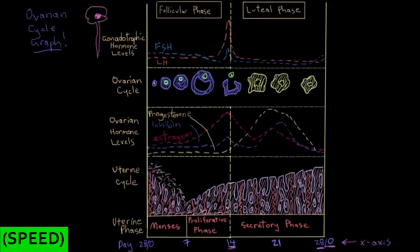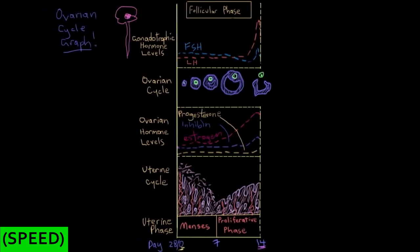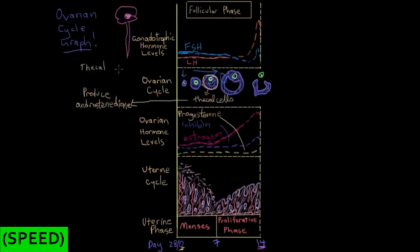For now we'll focus on the follicular phase part of the graph. On day zero, the anterior pituitary gland is releasing some FSH and LH at baseline levels. FSH is stimulating growth of the follicle, and as the days go by you can see it growing — the number of granulosa cells is increasing. Granulosa cells secrete estrogen, so estrogen in the blood rises. Additionally, LH makes the thecal cells surrounding the follicle produce androstenedione, which is very similar in structure to estrogen. The granulosa cells convert that androstenedione into actual estrogen, driving estrogen levels way up.